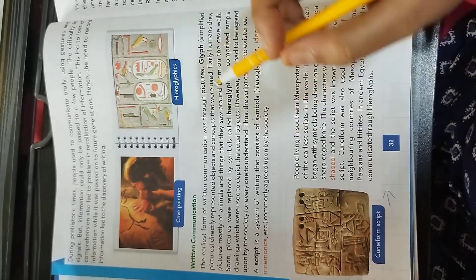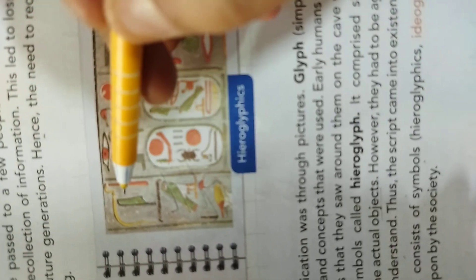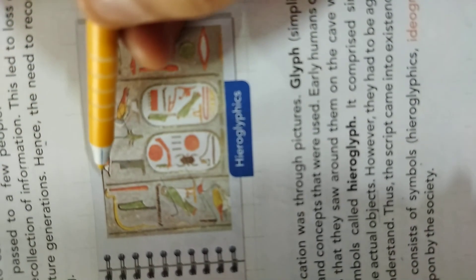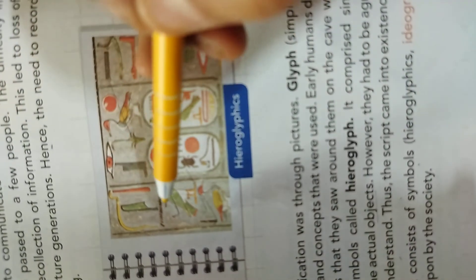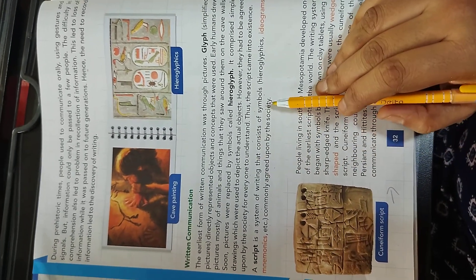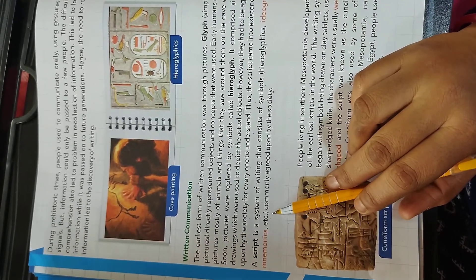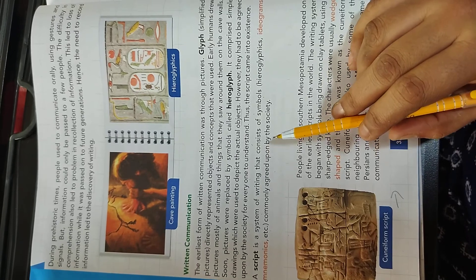That means if they draw some type of comb or leaf, that means one. If they draw some type of pictorial pictures, that means two. If they draw some type of bird's picture, that means three. So they indicate the animals and things to indicate some type of letters and numbers. A script is a system of writing that consists of symbols, hieroglyphic, ideograms, mnemonics, etc. commonly agreed upon by the society.